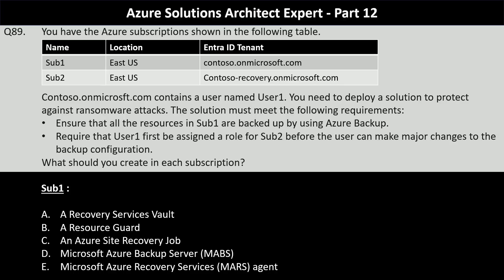You have the Azure subscriptions shown in the following table. You have two subscriptions named Sub1 and Sub2. Both are in East US location. The Entra ID tenant associated with Sub1 is contoso.onmicrosoft.com, and the Entra ID tenant associated with Sub2 is contoso-recovery.onmicrosoft.com. Now contoso.onmicrosoft.com contains a user named User1.